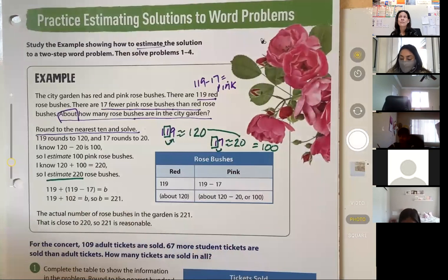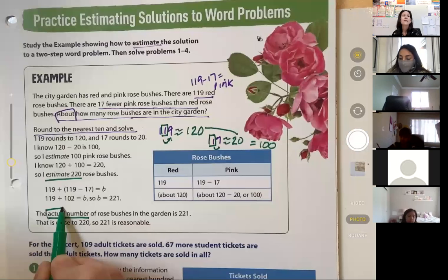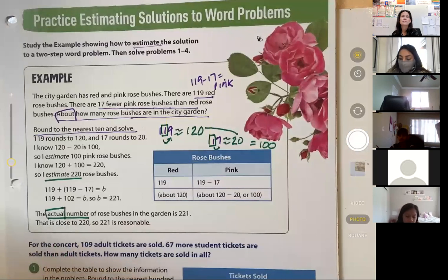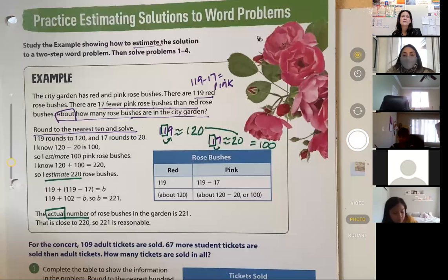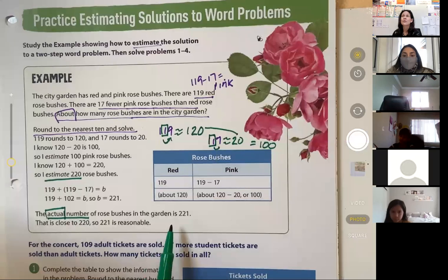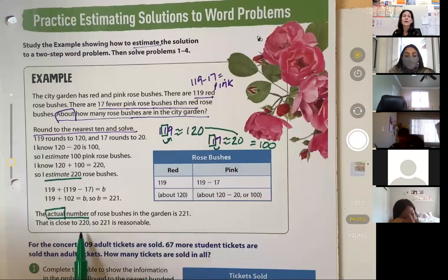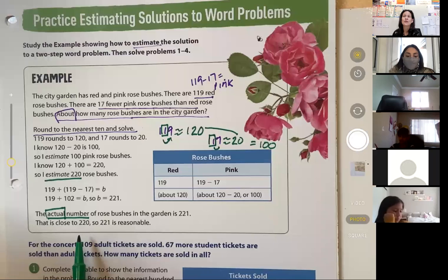And now we're going to solve for the actual number. The actual number. The actual number. Estimate so it's reasonable. Rounding. Estimating. Helps you check the reasonableness of a solution that you came up with. All right?